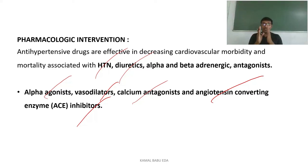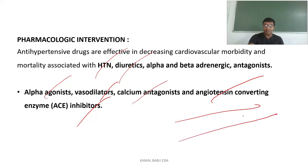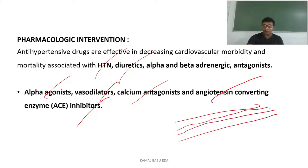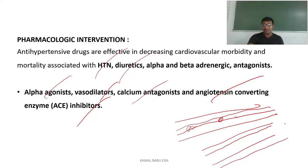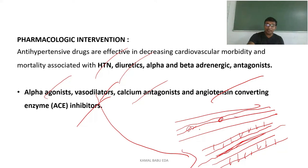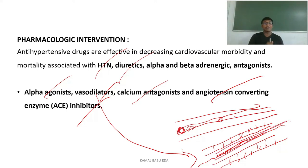Vasodilators are used because peripheral resistance occurs due to constriction of blood vessels, which narrows the pathway for blood and increases pressure inside the vessel. When you take a vasodilator, the blood vessel membrane relaxes, the pathway for blood widens, blood can flow easily, and peripheral resistance is decreased. Vasodilators mainly act on blood vessels to widen constricted vessels. These are the pharmacological interventions.